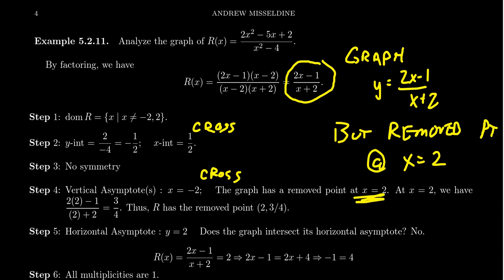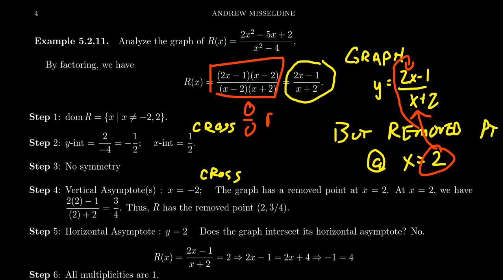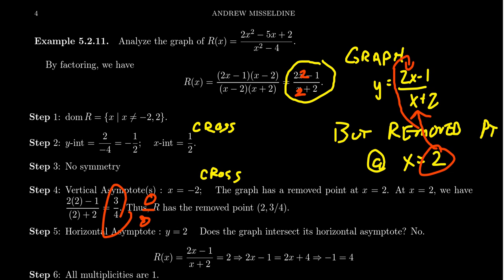Now, what about the removed point at x equals 2? A removed point has two coordinates. To find the y-coordinate, take x equals 2 and plug it into the reduced fraction — not the original, which gives 0 over 0. Plugging 2 into 2x minus 1 over x plus 2 gives 4 minus 1 over 2 plus 2, which is 3 over 4. So the removed point is at coordinates 2 comma 3 fourths.